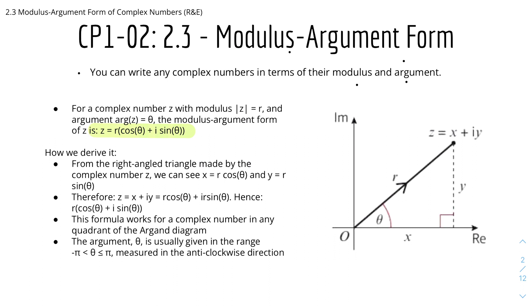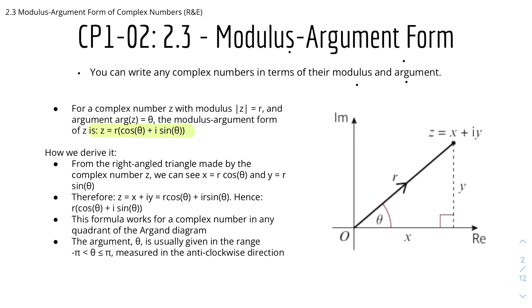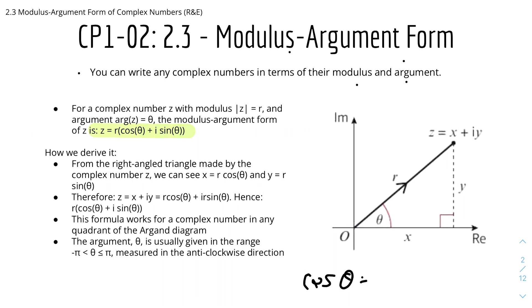And this is how we derive it. From the right angle triangle made using the complex number z, we can see that x = r cosθ, because cosθ equals adjacent over hypotenuse, where adjacent is x and hypotenuse is r. Similarly, y = r sinθ. Therefore we can write z = x + iy as r cosθ + ir sinθ, and factorising r out gives r(cosθ + i sinθ).